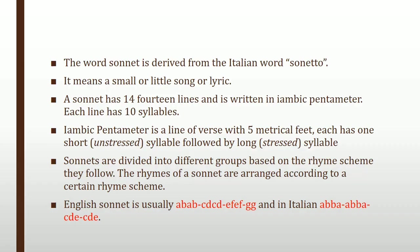The word sonnet is also derived from the Italian word 'soneto,' meaning a small or little song with lyrics. It is a 14-line poem written in iambic pentameter, with 10 syllables in each line. Iambic pentameter is a line of verse with 5 metrical feet, each consisting of one short unstressed syllable followed by one long stressed syllable.